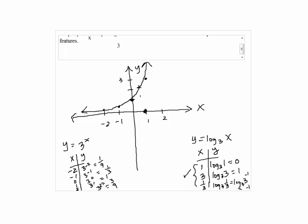So, we have when X equals 1, Y is 0, and X is 3, Y is 1, and when X is 1 third, Y is negative 1. So, the graph will look like this.